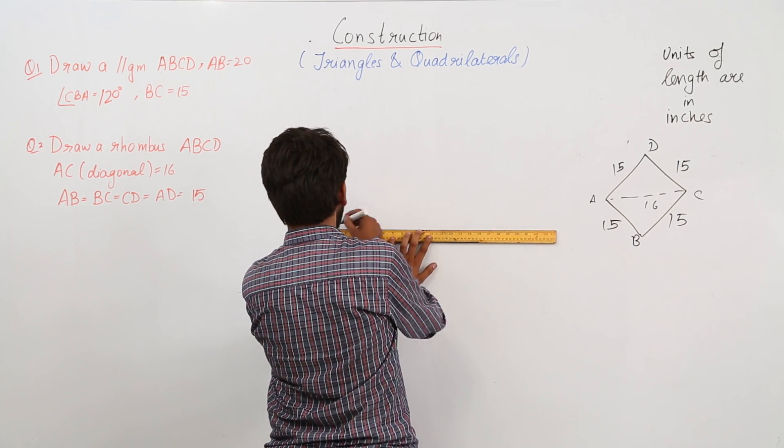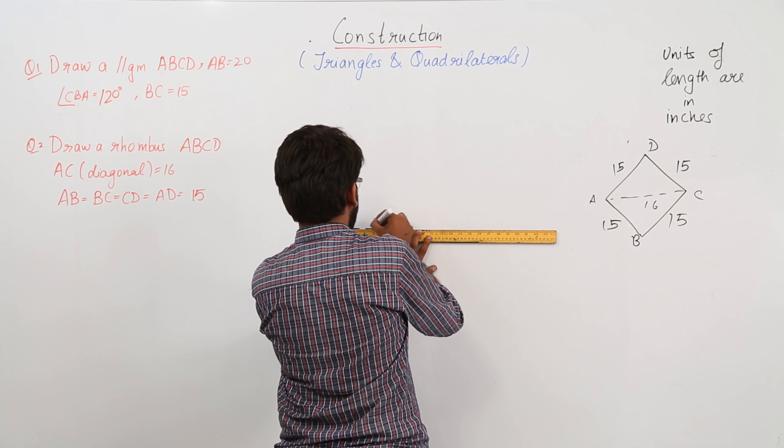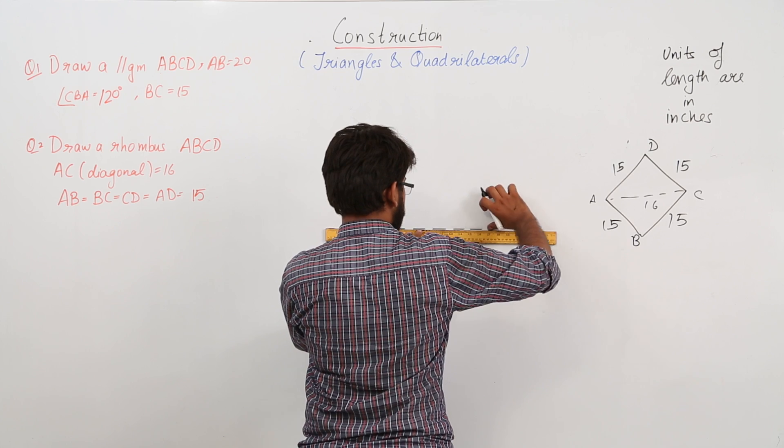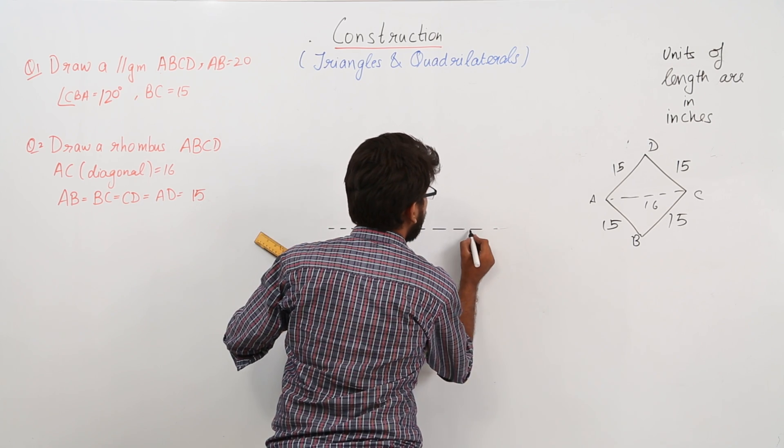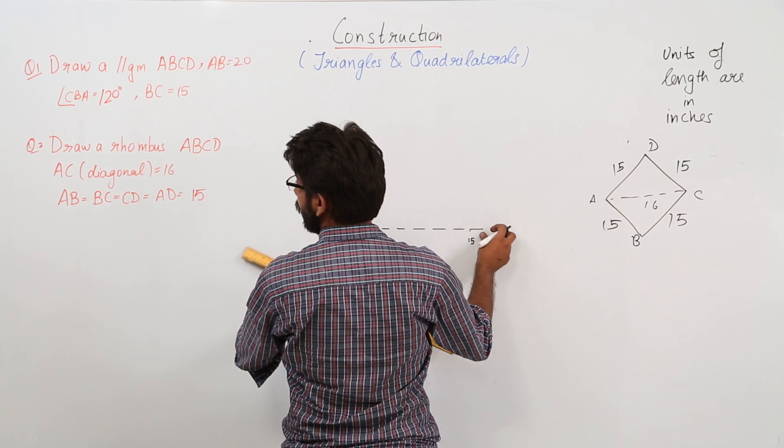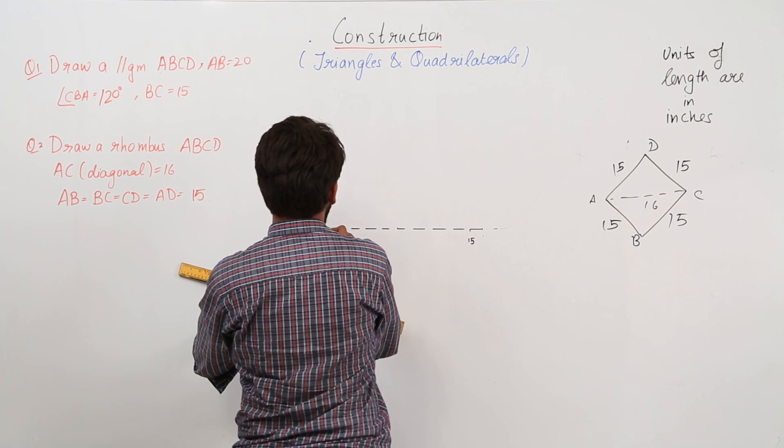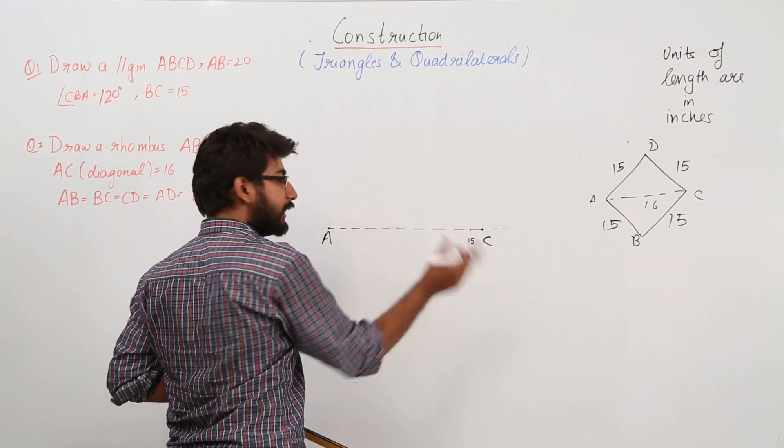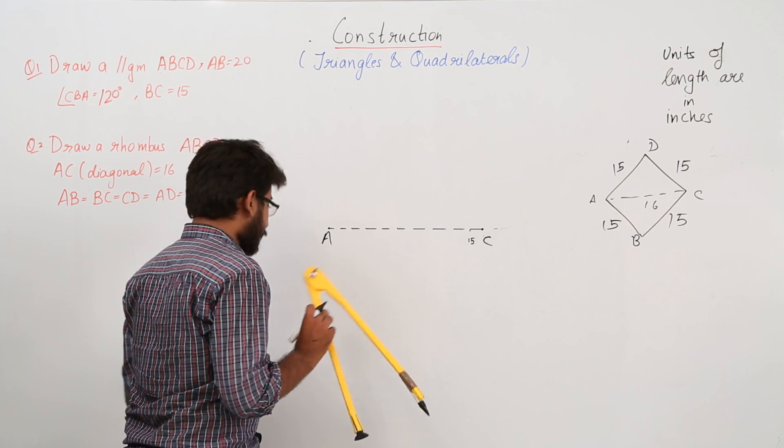So here is the mark of 15 and here is the mark of 16. So what are the vertices? A, this is the vertex C, and up till here the mark is 15. Why I have kept this mark? So that I can open my compass up to 15 inches.